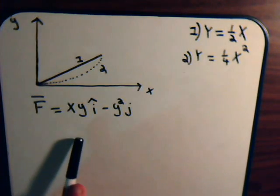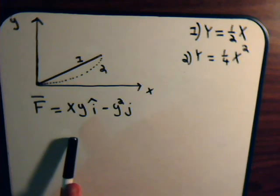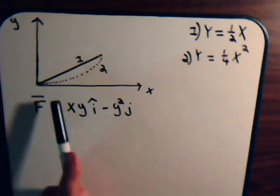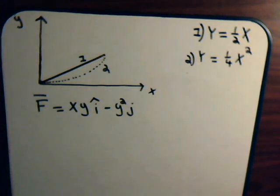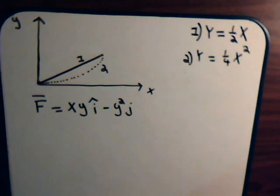And we're going to take the line integral of it about the curve y equals one-fourth x squared, and also about the line y equals one-half x. So, we're going to proceed exactly as we did in the last video.